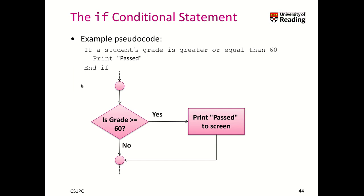Here we see the flow diagram of the conditional statement if, and we see a little bit of pseudocode. Here the pseudocode says if a student's grade is greater or equal than 60, then we want to print passed. We come here from our previous state and action, and we perform our comparison. Is the grade bigger or equal than 60? If it's not, we just proceed. If it is, then we perform the operations that are inside this statement. So in this case we print passed on our screen.